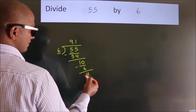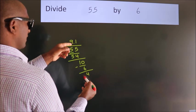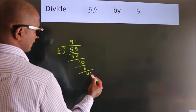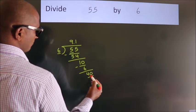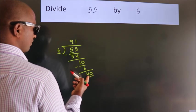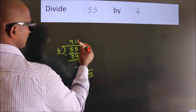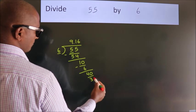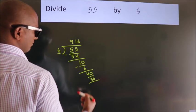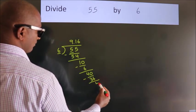After this, we already have the decimal, so directly take 0. So, 40. A number close to 40 in the 6 table is 6 sixes, 36. Now we subtract. We get 4.